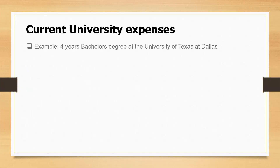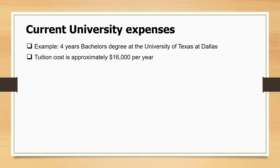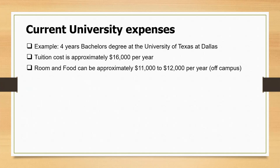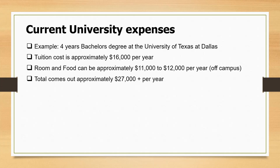Let's look at current university expenses, taking the example of a four-year bachelor's degree at the University of Texas at Dallas. The tuition cost per year is $16,000 — if you had to send your kid today, you'd need $16,000 for this year's tuition. Room and board comes to anywhere from $11,000 to $12,000 — imagine your kid spending $1,000 every month on food and off-campus apartment sharing with two or three students. So we're looking at $27,000 per year for one year of a bachelor's degree.